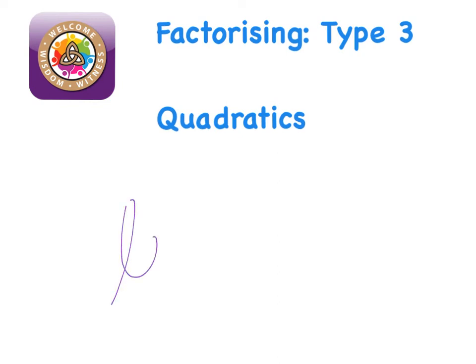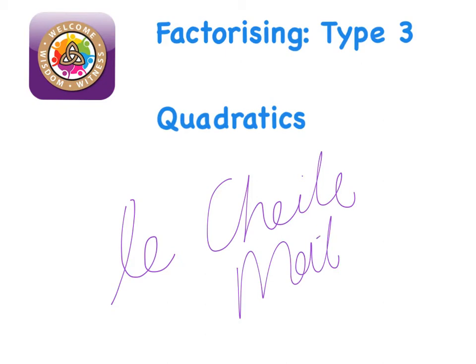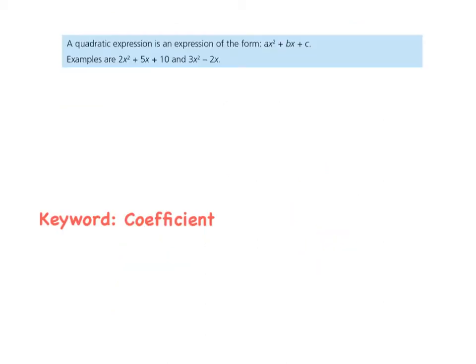Alright, so today's lesson in maths is on quadratics. It is the third type of factorising that we have started. Today's lesson is on quadratics. And a quadratic expression always has an x squared in it, an x, and more often than not, a number.